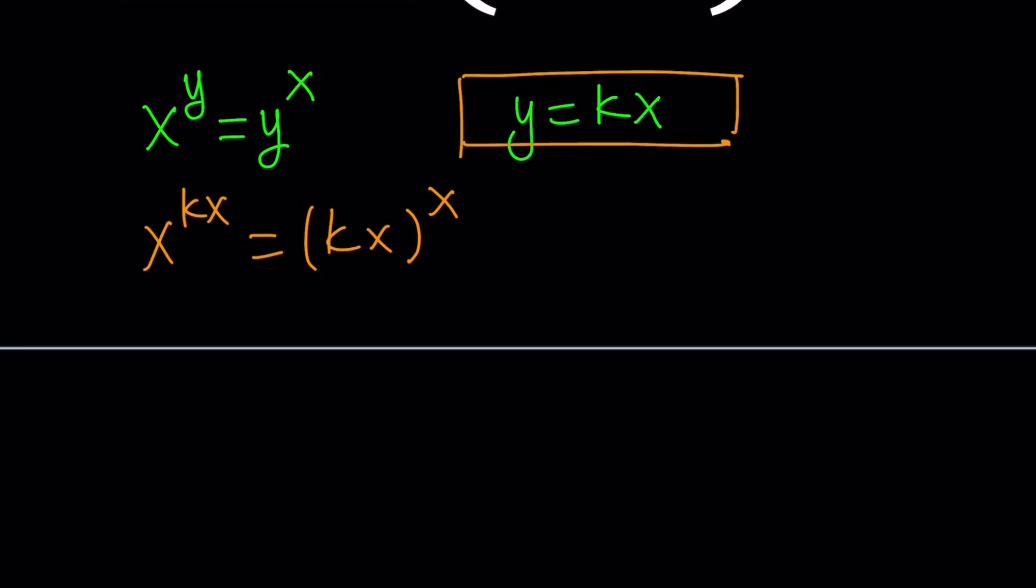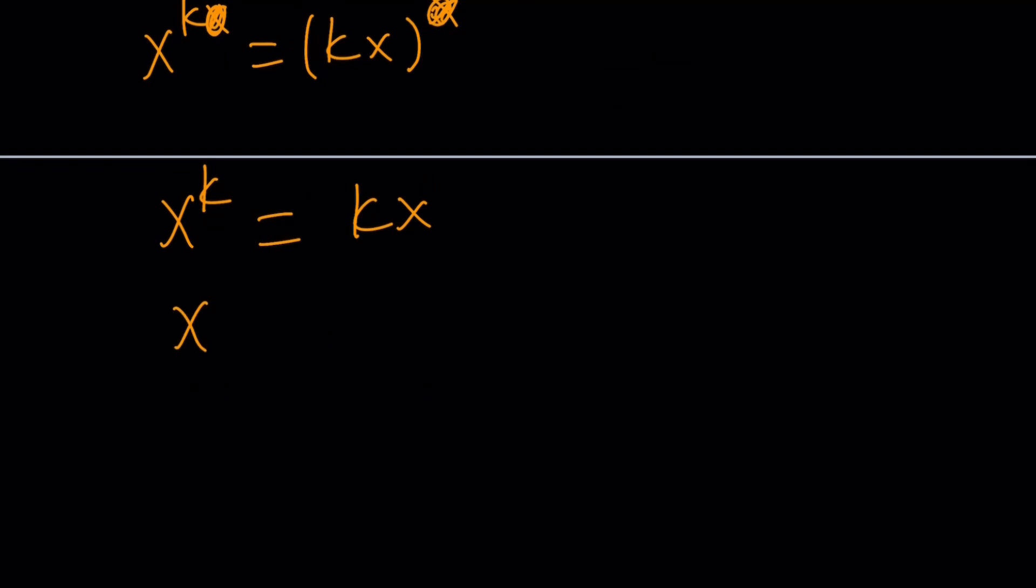And what can I do? I can just raise both sides to the power of 1 over x, and get rid of these x's, and this gives us something a lot easier to work with. Divide both sides by x. x to the power k minus 1 equals k, and then raise both sides to the power 1 over k minus 1, you get k to the power 1 over k minus 1.